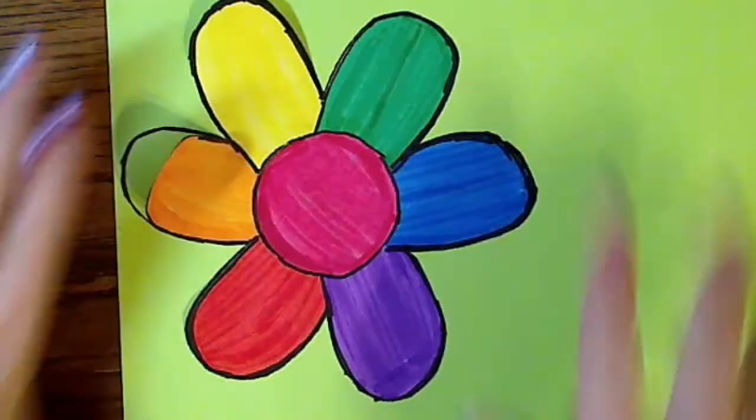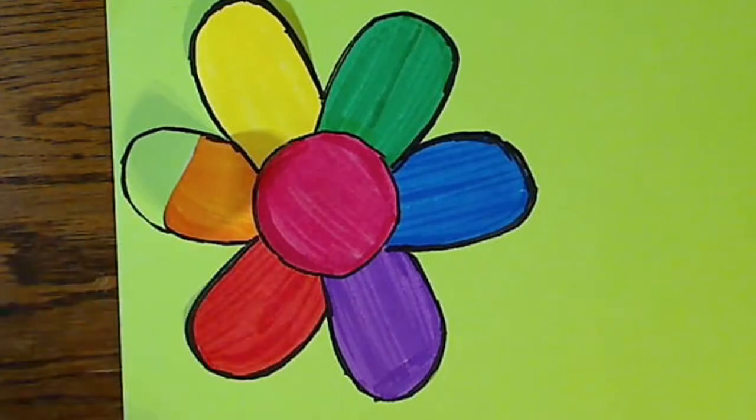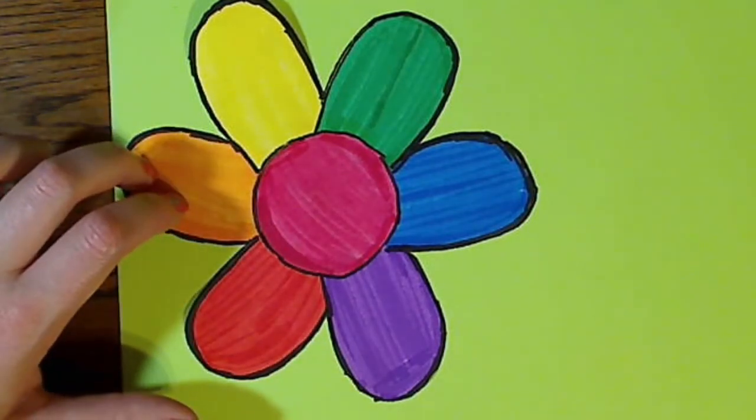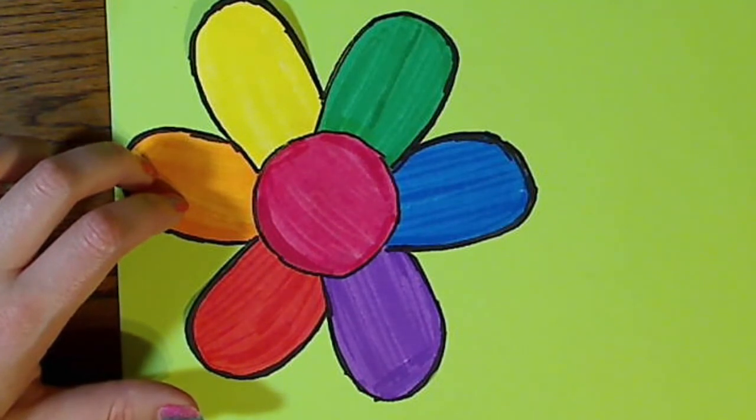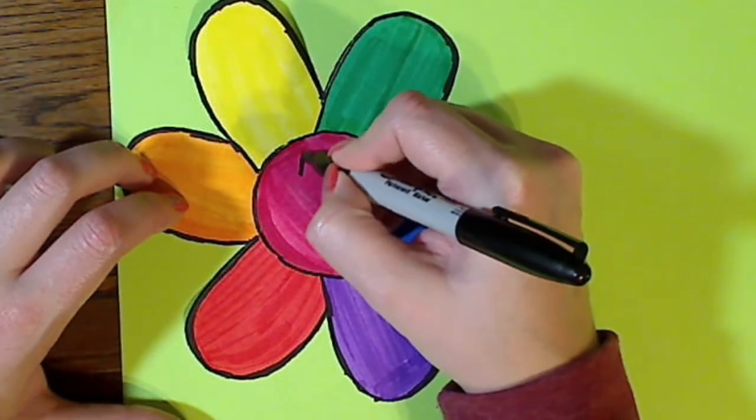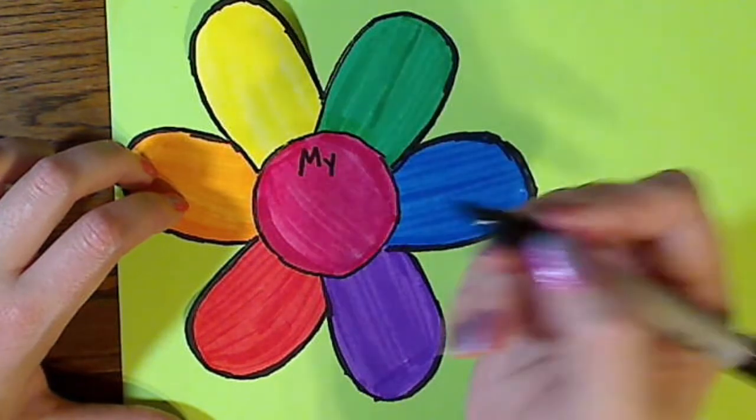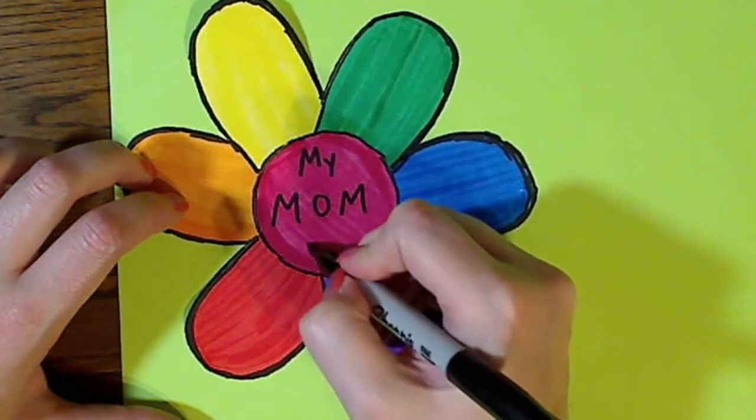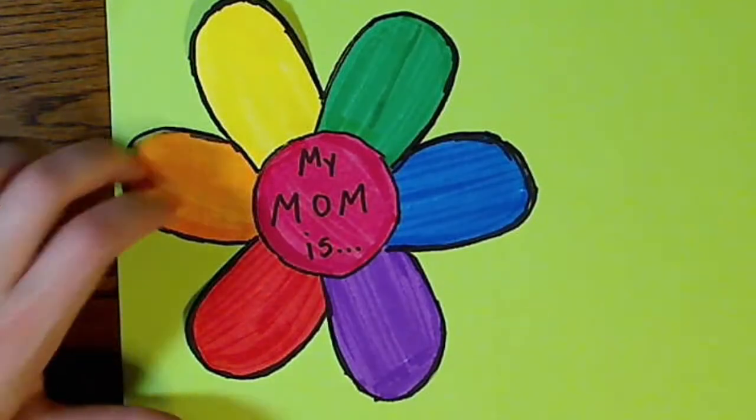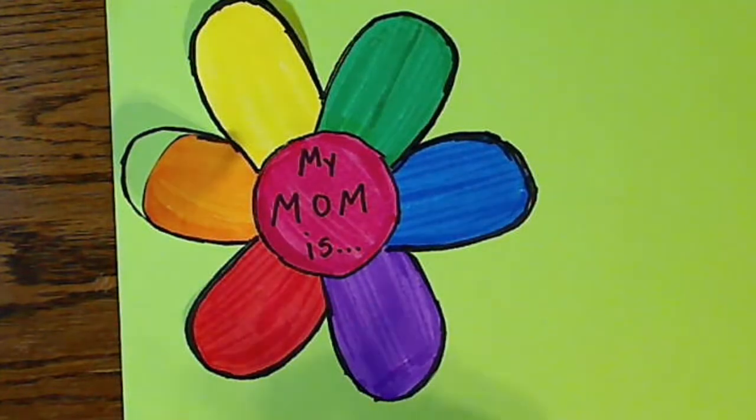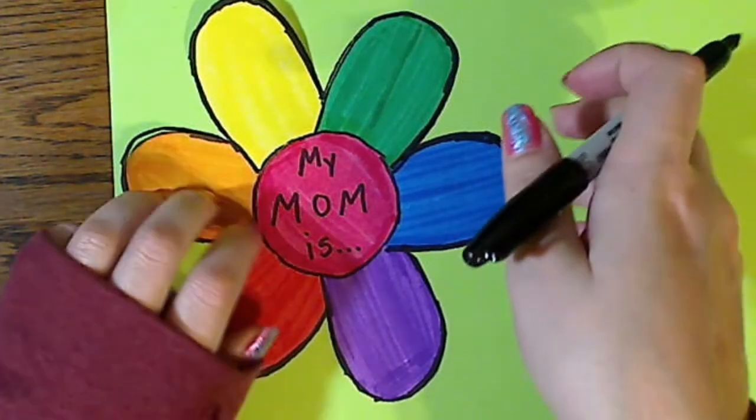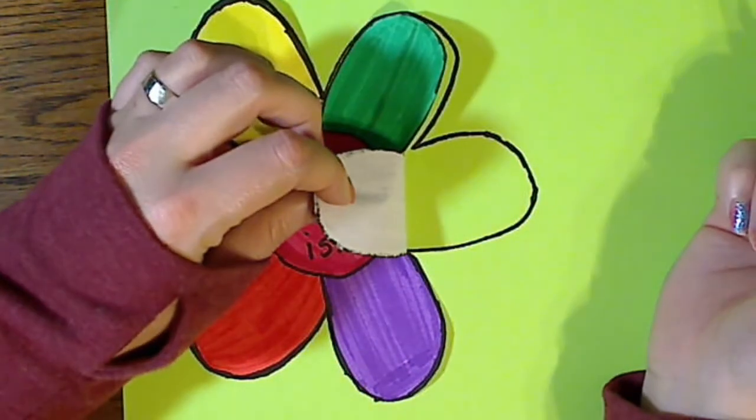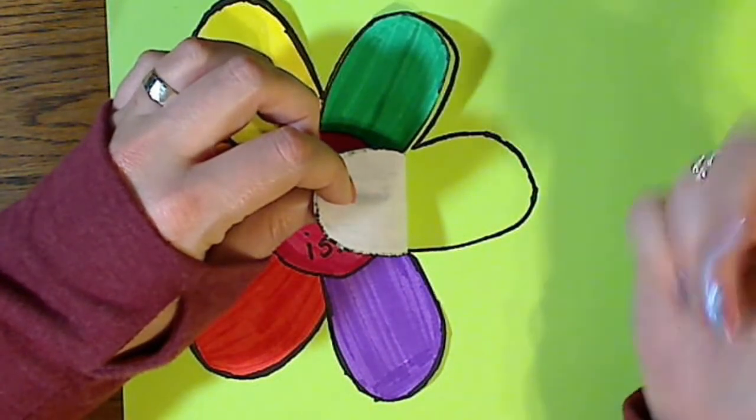Now that I have outlined everything, there's a reason we did it on the green paper, too, and I'll show you guys that in just a second. So on this center circle, we are going to write, my mom is. There we go. My mom is. You can make these letters as fancy as you want, or as simple as you want. And then underneath all of these petals, I want you to write something about your mom. One word, or two words, anything that comes to mind.